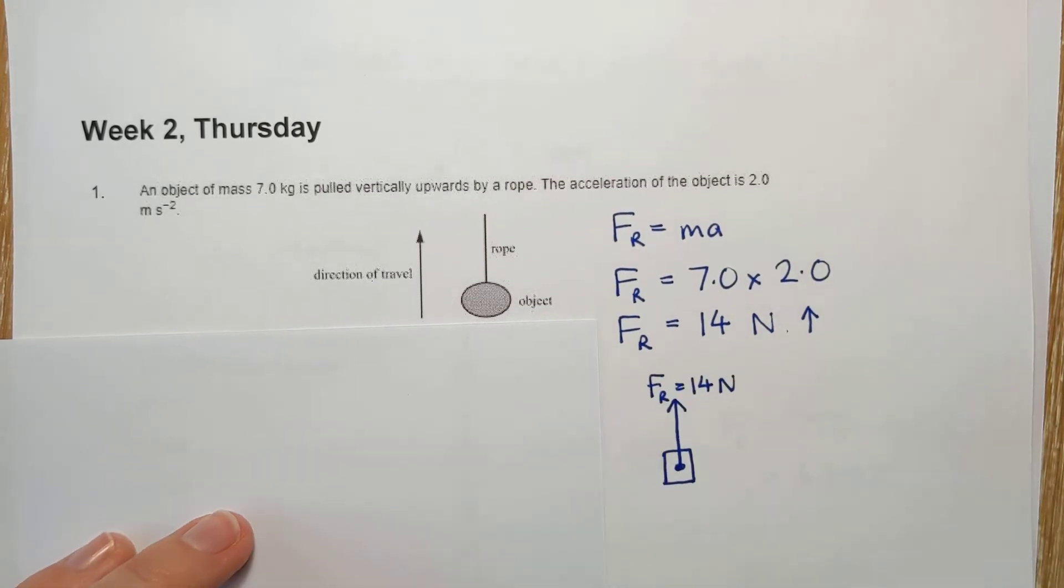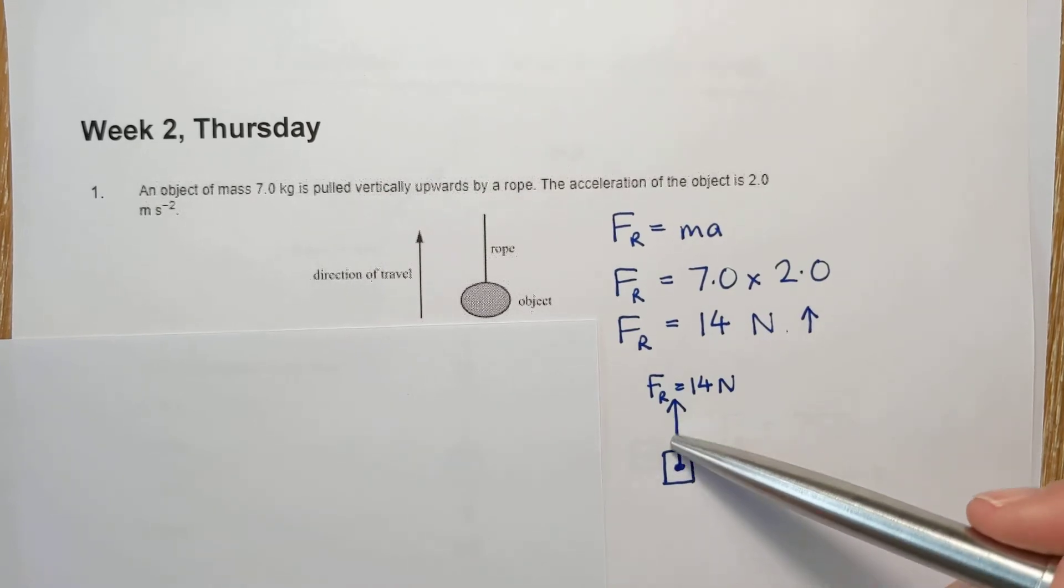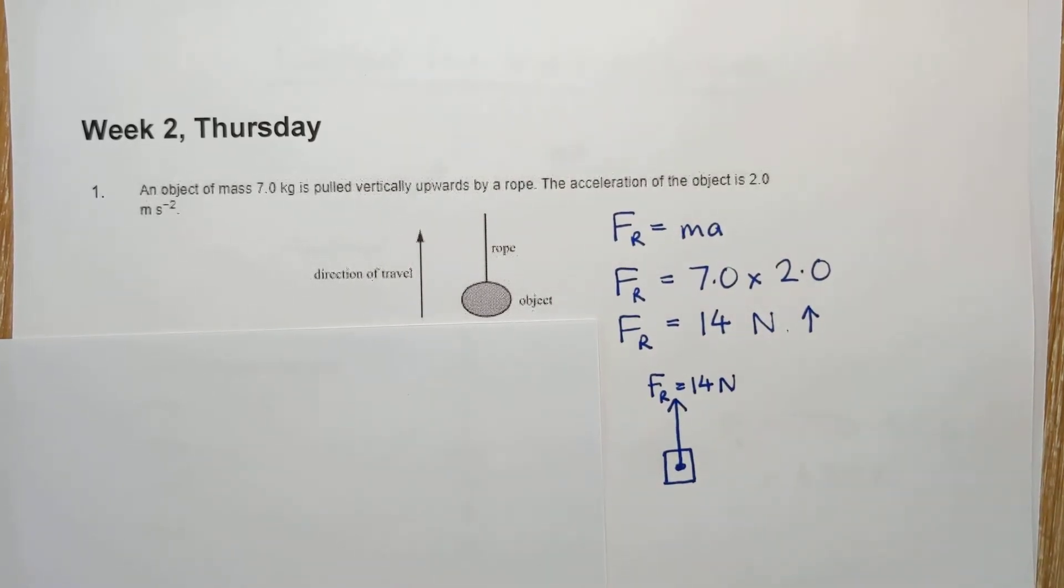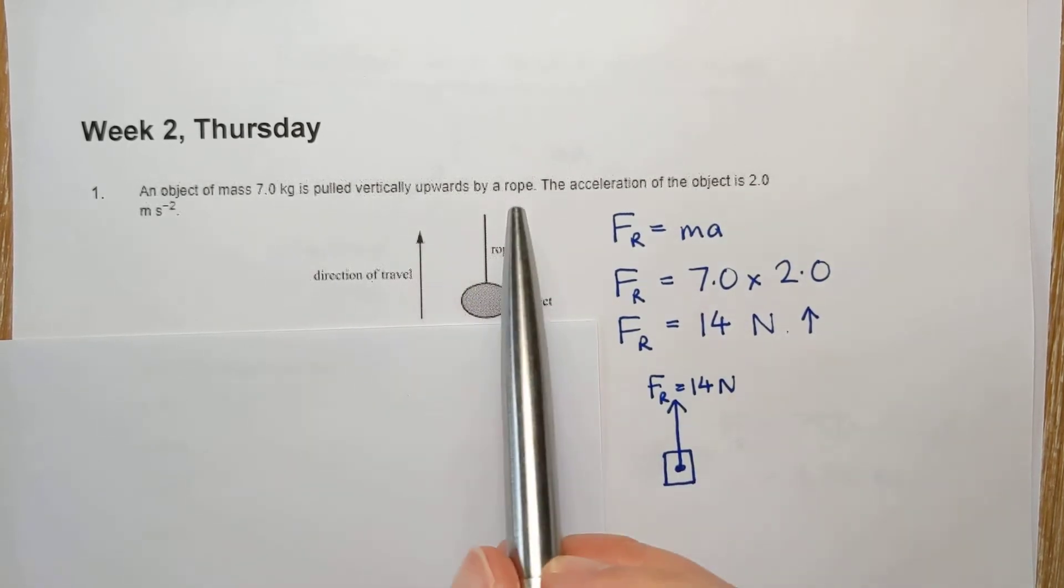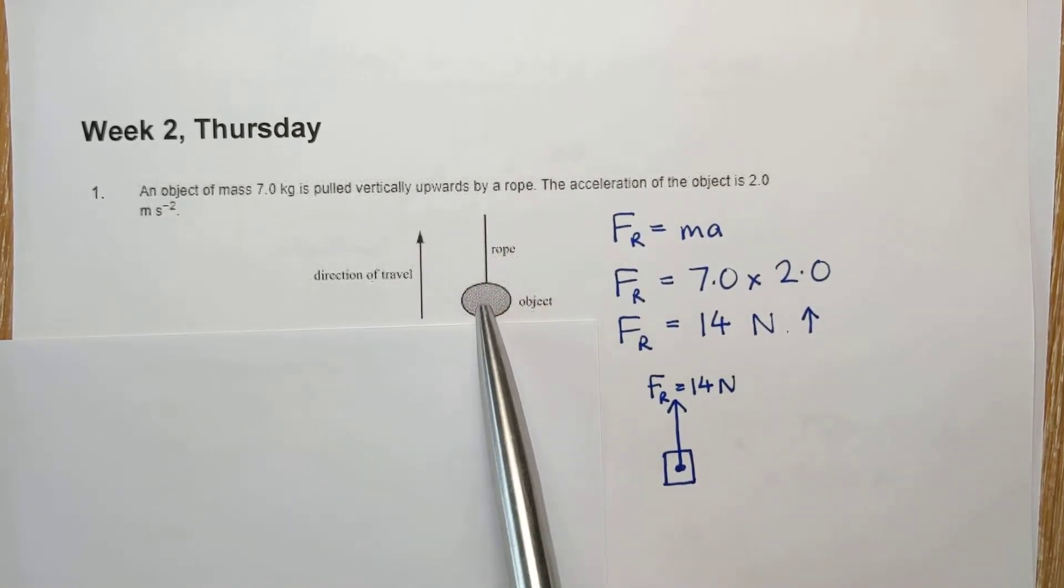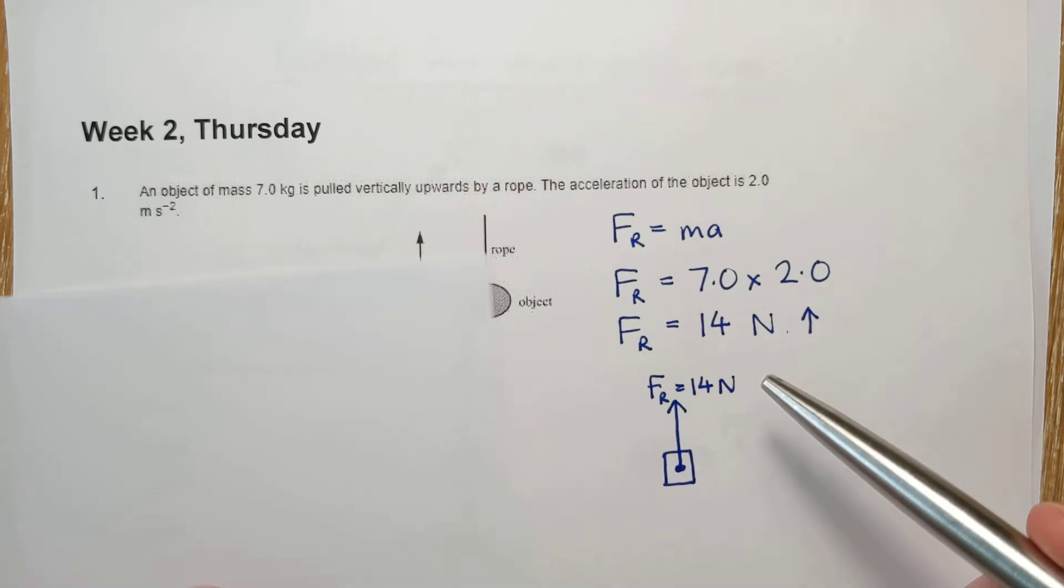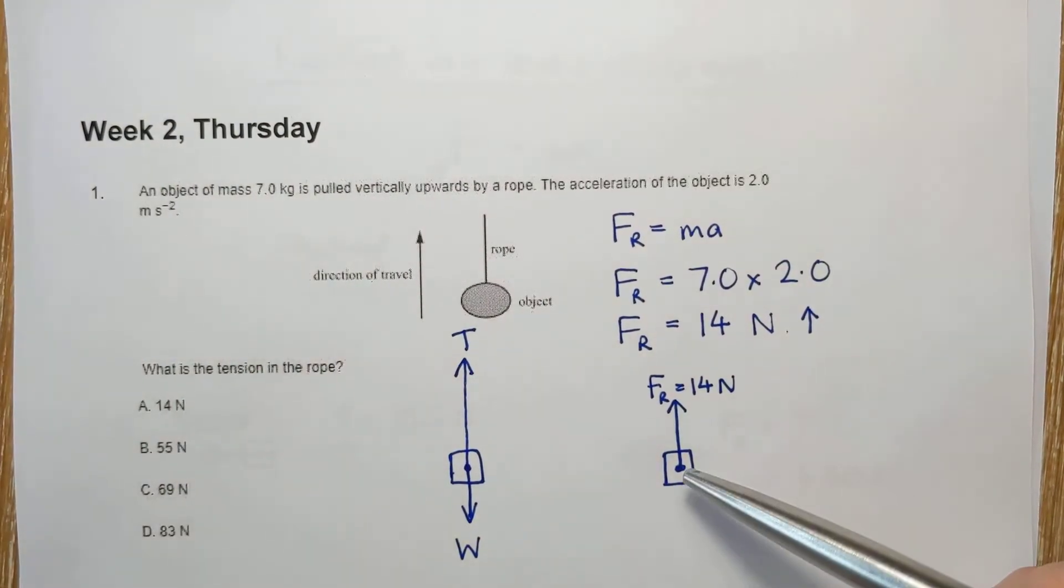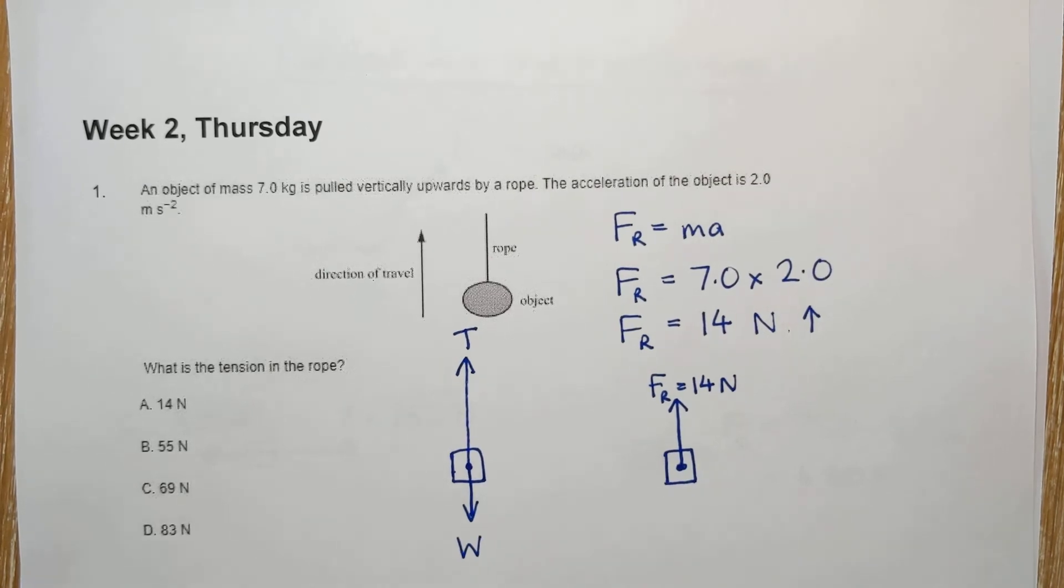My second diagram, which we're drawing first this time, with just the resultant force on it, there we go, 14 newtons upwards. Now, what that tells me is that I know I'm going to have two forces on this object, I've got the weight downwards, and I've got the tension from the rope upwards. What this tells me is that the tension must be bigger, because otherwise, the resultant force wouldn't be upwards.